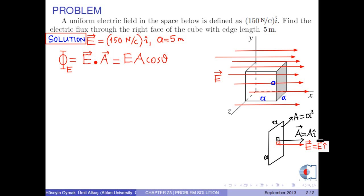E dot A is expanded as E times A times cosine theta. According to the figure, the electric field vector and the area vector are parallel. Therefore, angle theta between them is zero, so cosine theta is 1.